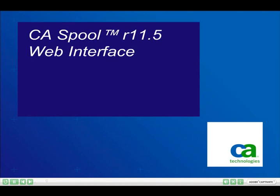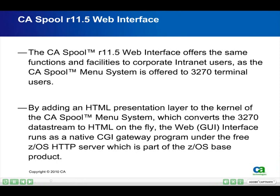This video presents the highlights and functions of the CA Spool Release 11.5 Web Interface. The CA Spool Release 11.5 Web Interface offers the same functions and facilities to corporate intranet users as the CA Spool Menu System offers to 3270 terminal users. By adding an HTML presentation layer to the kernel of the CA Spool Menu System, which converts the 3270 data stream to HTML on the fly, the Web GUI interface runs as a native CGI gateway program under the free ZOS HTTP server, which is part of the ZOS-based product.